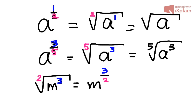which I cannot see in this example. So it means it's two. It's a square root. And then we have m to the power of three halves.